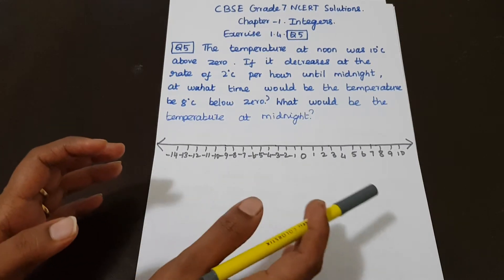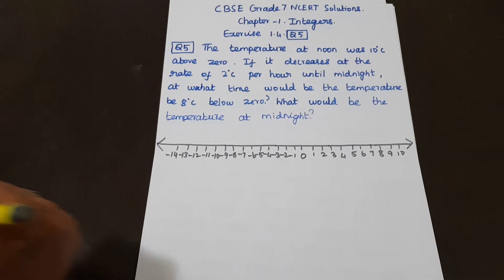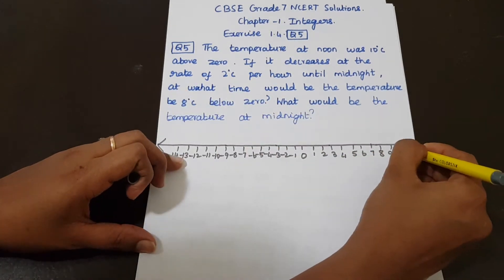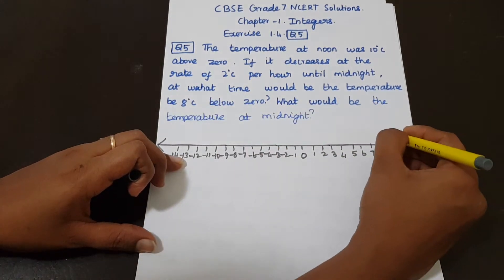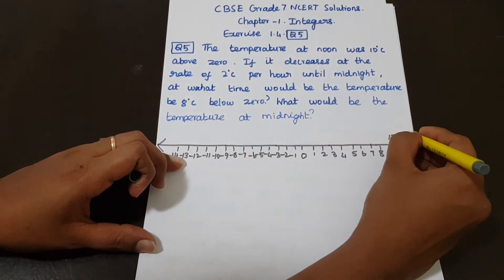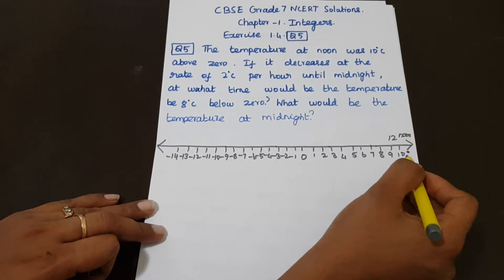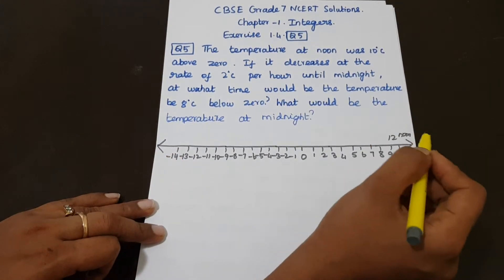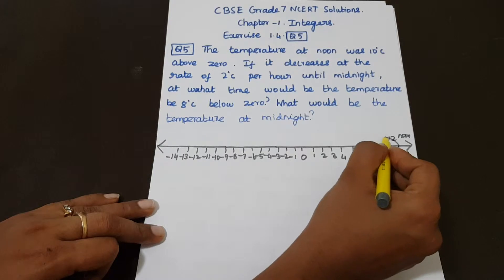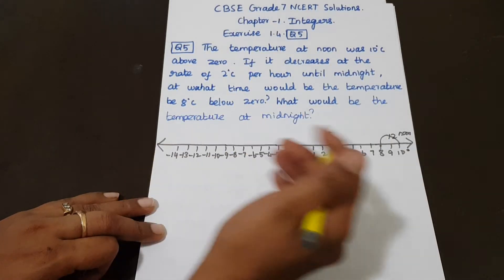Now this is the number line. At 10 degree Celsius, it is 12 noon. Now 1 hour means 2 degree Celsius decrease, so movement is to the right going left — decreasing direction.